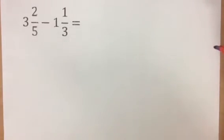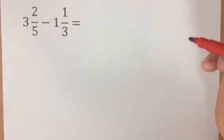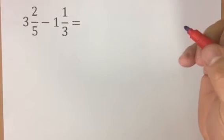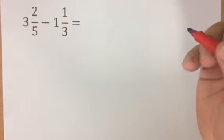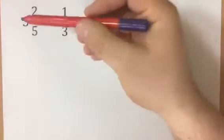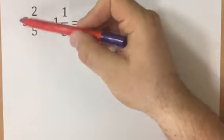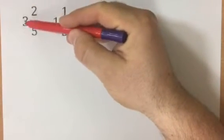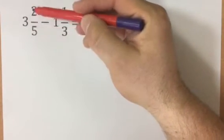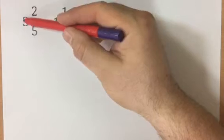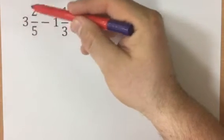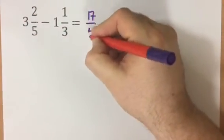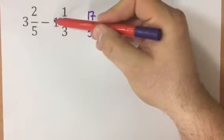Ok, let's look at how you would subtract one mixed number from another mixed number. Before we can go ahead and subtract the fractions, we have to make them top-heavy. So the 3 whole ones here we have to incorporate into this fraction. 3 whole ones is the same as 15 fifths, plus the 2 fifths we've got means that this 3 and 2 fifths becomes 17 fifths.